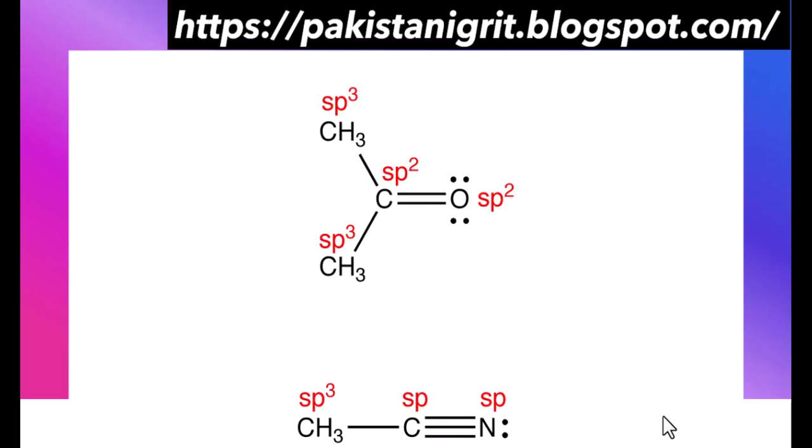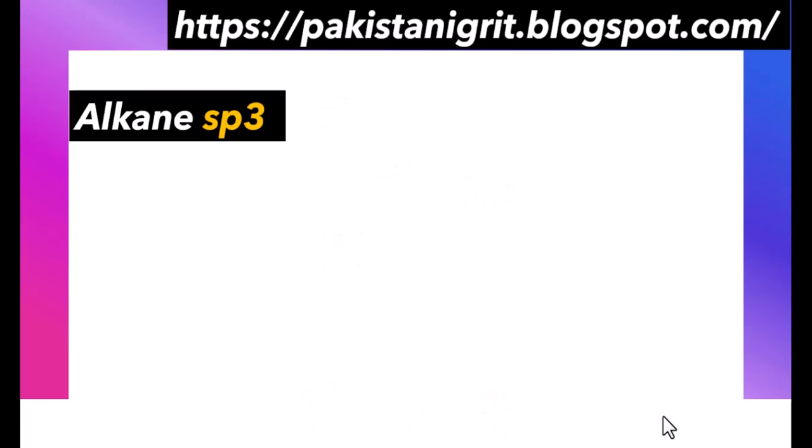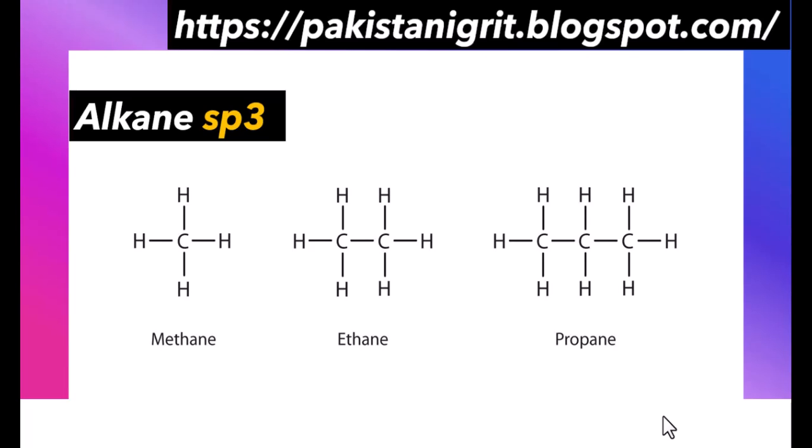You may be familiar with these hybridizations, but in this video I will tell you some tricks on how to find hybridization in carbon, oxygen, nitrogen, and sulfur atoms. The first example is alkane. We know that alkane has four sigma bonds and sp3 hybridization, so here we have methane, ethane, and propane.